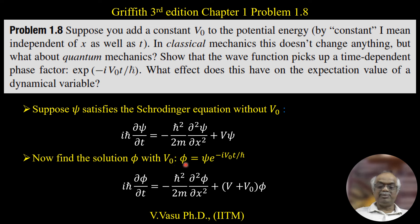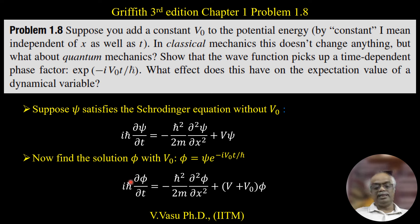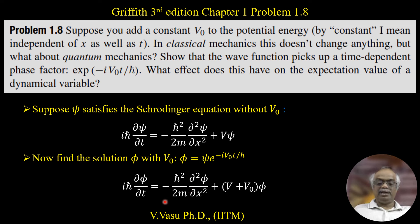With V-naught, the new wave function is pi, where pi equals psi times e to the power of minus i V-naught t over h-bar, as given in the problem. The Schrödinger equation then becomes: i h-bar delta pi over delta t equals minus h-bar squared over 2m times delta squared pi over delta x squared, plus V plus V-naught, times pi.